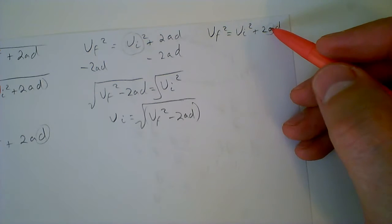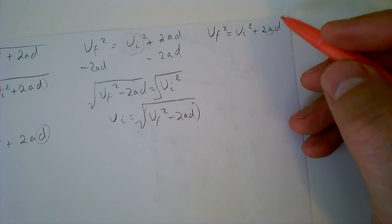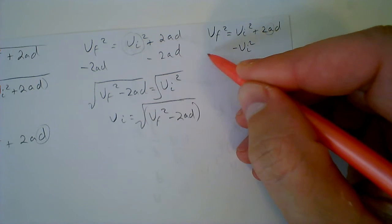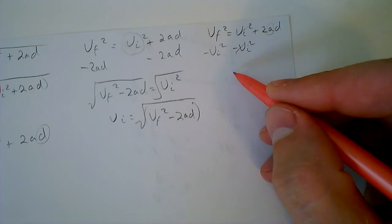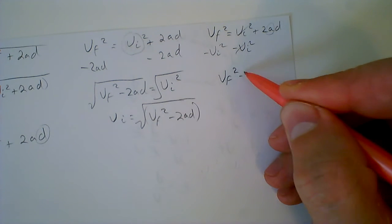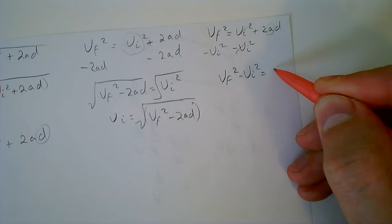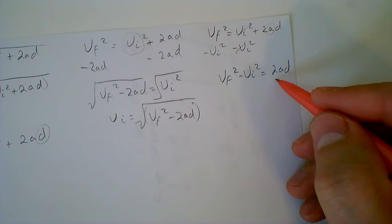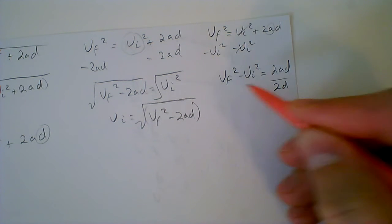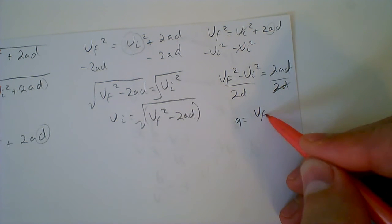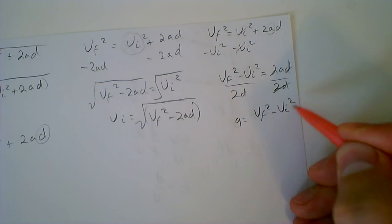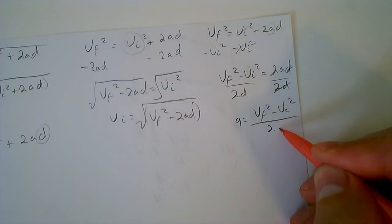And then we go over here, which we want to solve for A. What we're going to do is subtract VI squared from both sides. So we end up getting VF squared minus VI squared equals 2AD, and then we want to divide everything we don't need, 2D out, and we get A equals VF squared minus VI squared over 2D.